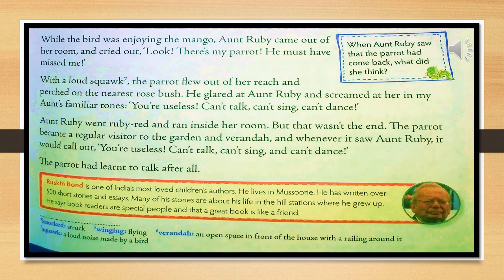Aunt Ruby went ruby red and ran inside her room. But that was not the end. The parrot became a regular visitor to the garden and veranda, and whenever it saw Aunt Ruby, it would call out, 'You are useless, can't talk, can't sing and can't dance.' The parrot had learned to talk after all. He is just a bird — he has the gift of imitating human voice. He doesn't know the meaning of those words, so he used to repeat them.